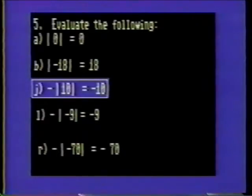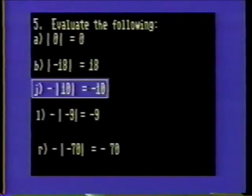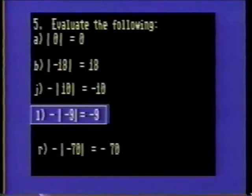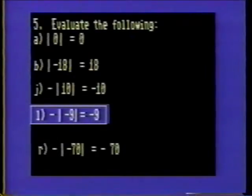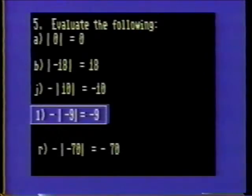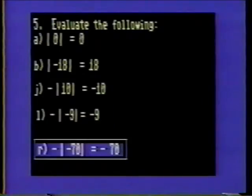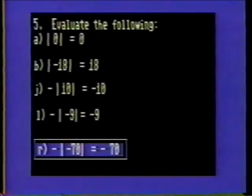Problem 5J: The absolute value of 10 is 10. Minus the absolute value of 10 is minus 10. Problem 5L: The absolute value of minus 9 is 9. Minus the absolute value of minus 9 is minus 9. Remember that the minus sign outside of the absolute value symbols is unaffected by the operation. Problem 5R: Minus the absolute value of negative 70 is minus 70.